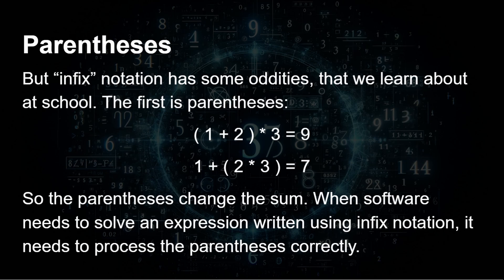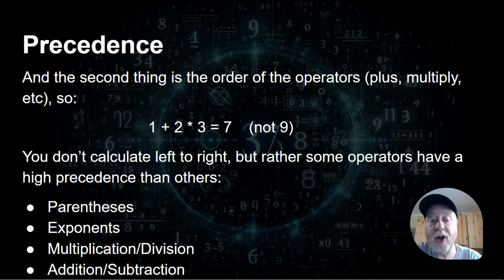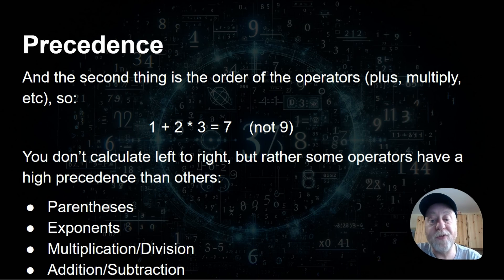If you're writing computer software that needs to solve an expression that's been typed in — say one plus two with brackets multiplied by three — it's going to be different depending on where the brackets are, and the software needs to take those into account. The other important thing is the order of operators. So one plus two times three: if you did that left to right, you'd get nine, but the actual answer is seven because multiplication comes before addition.